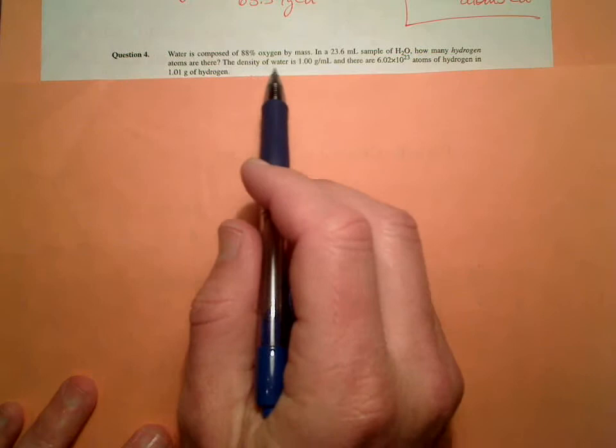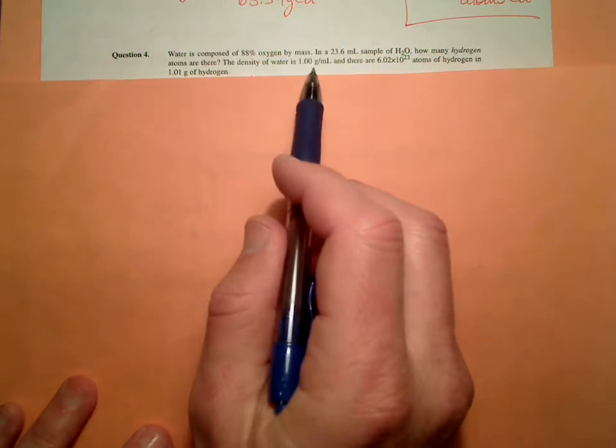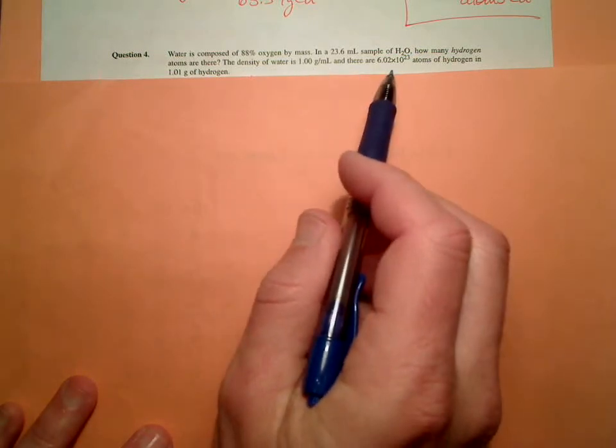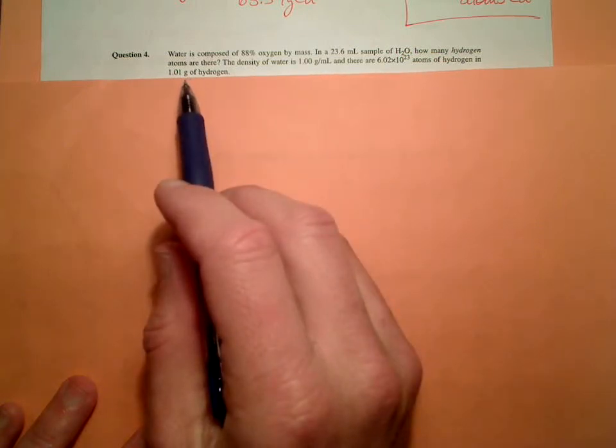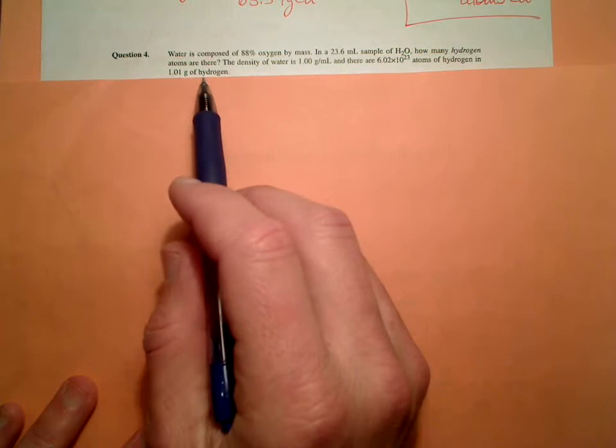Then we go on to get the density. The density of water is 1.00 grams per milliliter, and there are 6.02 times 10 to the 23rd atoms of hydrogen in 1.01 grams of hydrogen. So that's a conversion factor.